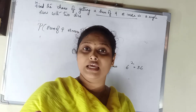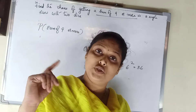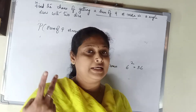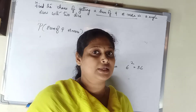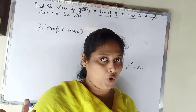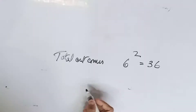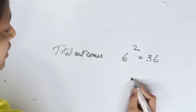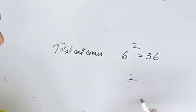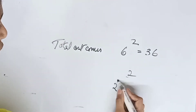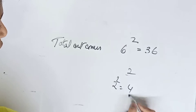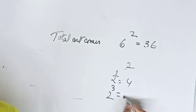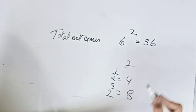For 3 dice it would be 6 raised to 3. For 2 coins it is 2 raised to 2, which is 4. For 1 coin there are 2 outcomes. For 3 coins it is 2 raised to 3, which is equal to 8.